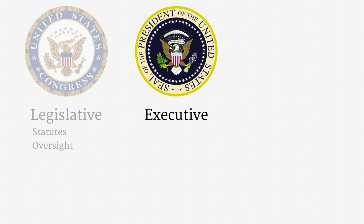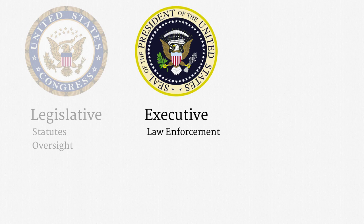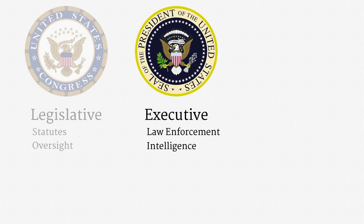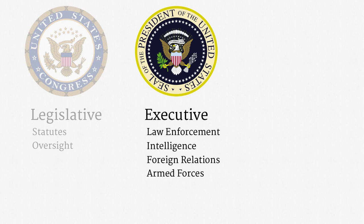The executive branch, headed by the President, undoubtedly has the broadest set of surveillance responsibilities. We'll spend much of the course discussing law enforcement — that is, when the government investigates and litigates violations of the law. More specifically, we're going to focus on criminal law enforcement, though you should be aware that there are civil forms of law enforcement, including many types of business regulation, and the applicable surveillance law is largely the same. The executive branch is also responsible for intelligence activities; we're going to discuss the National Security Agency's spying programs at some length later in the course. Some other areas of executive power that arise in surveillance law are the conduct of foreign relations and commanding the armed forces.